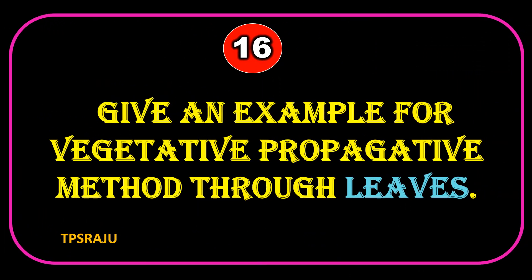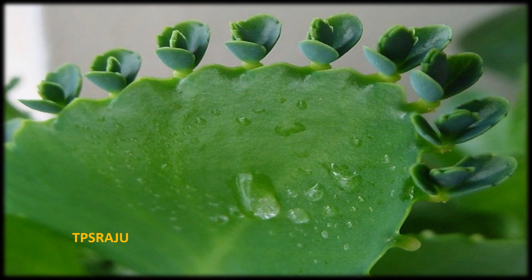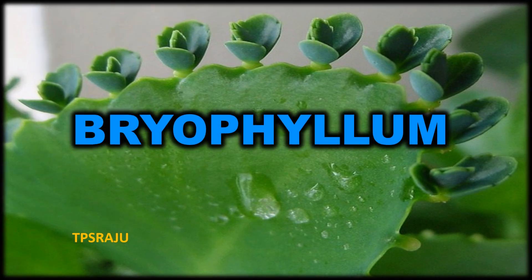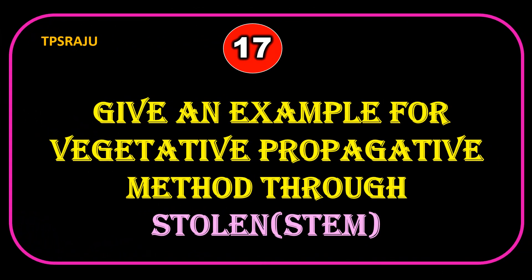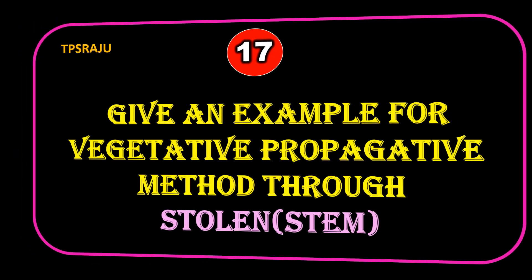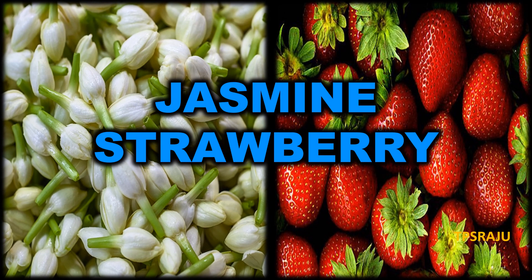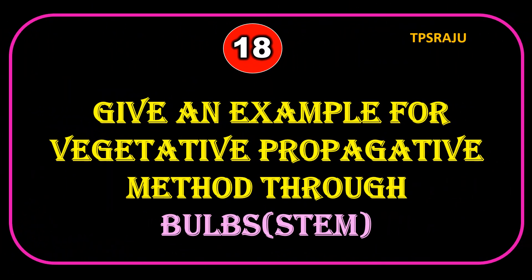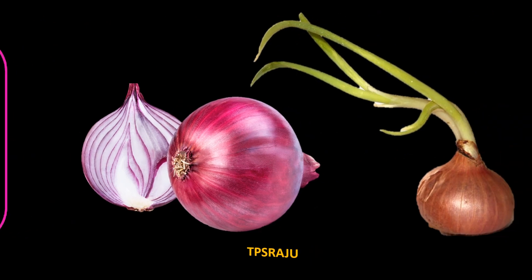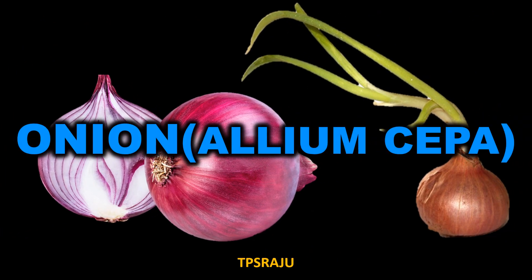Give an example for vegetative propagation method through leaves. Bryophyllum. Give an example for vegetative propagation method through stolon. Jasmine and strawberry. Give an example for vegetative propagation method through bulbs. Onion.